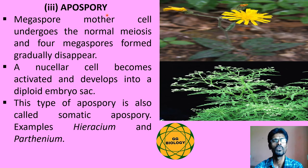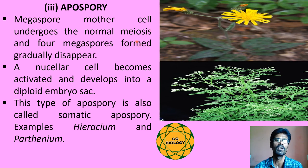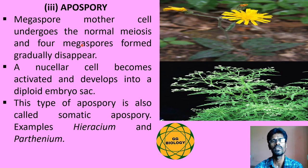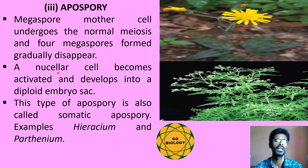The third type is apospory, where the megaspore mother cell undergoes normal meiosis and four megaspores are formed, but these four megaspores gradually disappear. Instead, a nucellar cell becomes activated and develops into a diploid embryo sac. This type is also called somatic apospory, as seen in Hieracium and Parthenium.